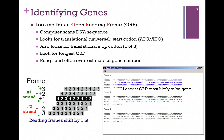Once we have the sequence of the genome, how do we identify potential genes? There are two ways. The first is to look for an open reading frame, or ORF.